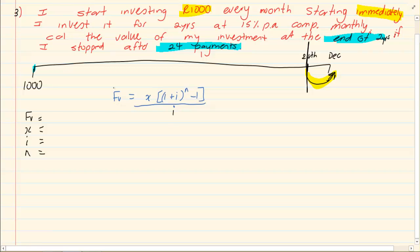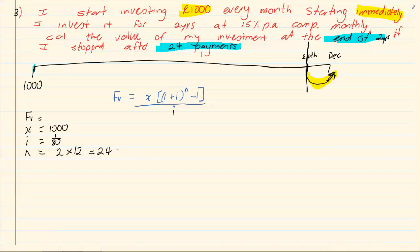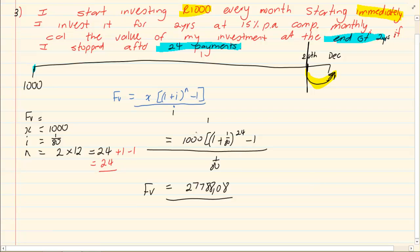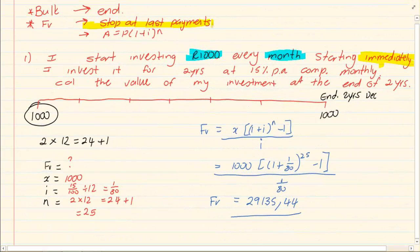We are using the future value formula. Our payment is a thousand rand, our I is one over eighty. For N it's usually two times twelve which is twenty-four. You should have added one because they said we did a payment immediately, but they are telling us we only made twenty-four payments, which means they didn't do the last payment. That's why we only have twenty-four payments. Substituting: a thousand rand, open bracket, one plus one over eighty to the power of twenty-four minus one, over one over eighty, which gives us R27,778.08.